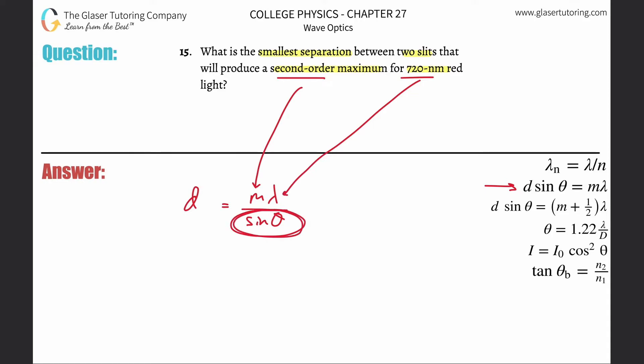The largest value of sine theta will produce the smallest distance. The largest value for sine theta is 1 - it can't go above 1.